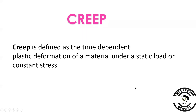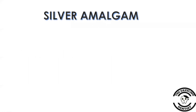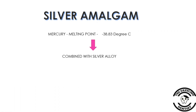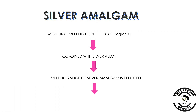Let us make this clear through an example. In silver amalgam, mercury is a component having a melting point of minus 38.83 degrees Celsius. When combined with silver alloy, the melting range of silver amalgam is reduced and some of its components have melting points close to those of the oral cavity. Then during intake of hot food followed by mastication, the constant load of mastication causes creep in the amalgam, which leads to marginal ditching or breakdown.